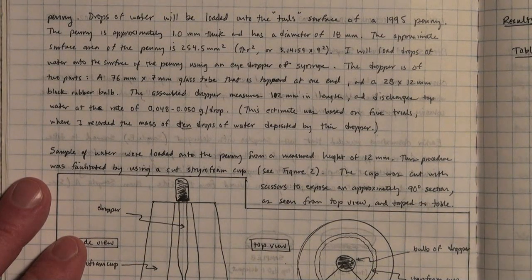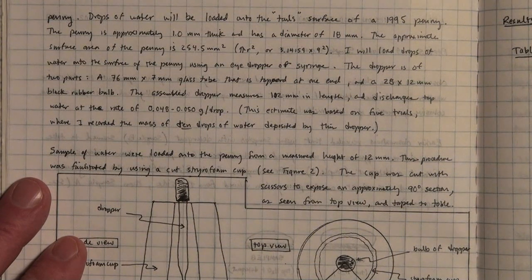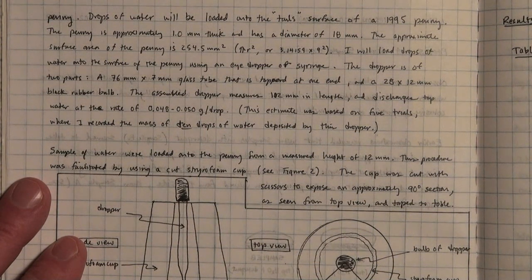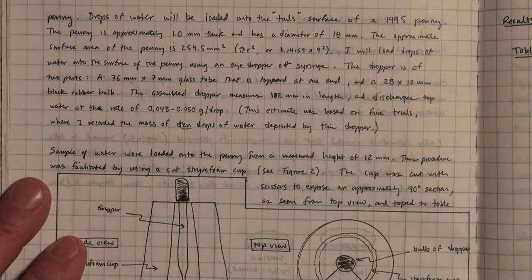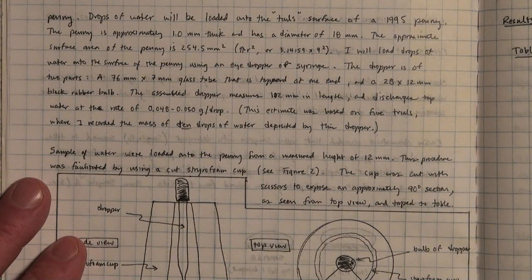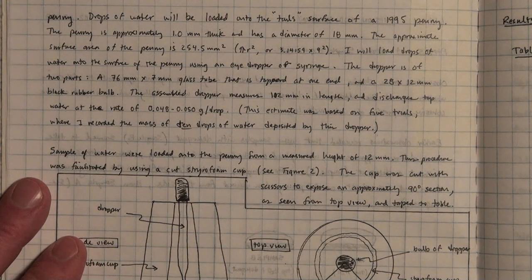Drops of water will be loaded onto the tail surface of a 1995 penny. This penny is approximately a millimeter thick and has a diameter of about 18 millimeters, and the approximate surface area of the penny is about 254.5 millimeters squared. You can see the calculation there.